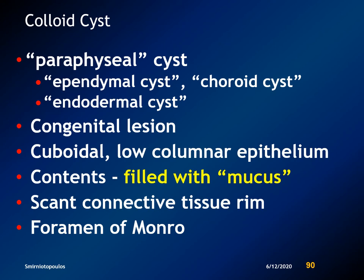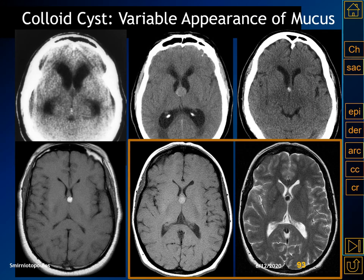Colloid cysts have many synonyms, including paraphyseal cysts, ependymal cysts, choroid cysts, and endodermal cysts. This is a congenital lesion that grows slowly, reaching 15 to 25 millimeters in diameter when the patient reaches 15 to 25 years of age. The protein content of the mucus is extremely variable. If the protein is relatively low, the attenuation and signal intensity will be more like water. If the protein concentration is very high, the colloid cyst can become hyperattenuated on CT and dark on MR. These images illustrate the variability in attenuation and signal intensity of colloid cysts, all showing the lesion in the characteristic location in the anterior portion of the third ventricle, just at the foramen of Monro.